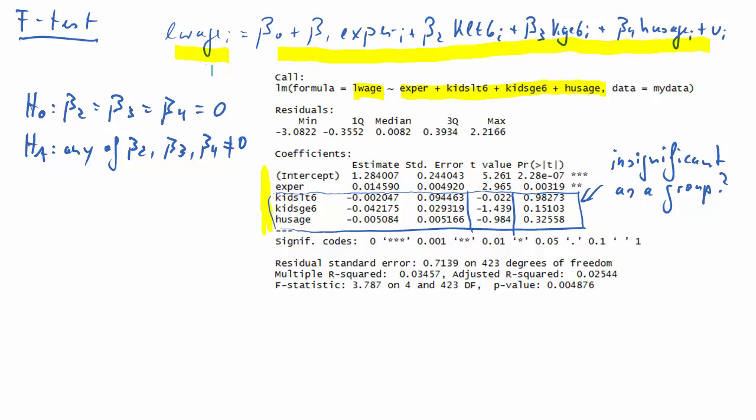So let's think about how the model looks like if the null hypothesis was true. Then we would have as explanatory variables only the constant and experience. So that would be a restricted or shorter or smaller model.